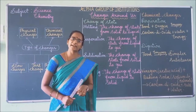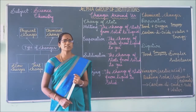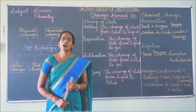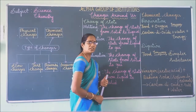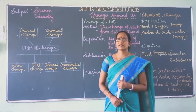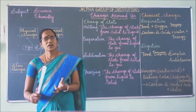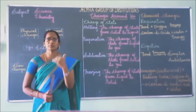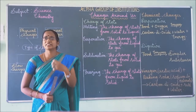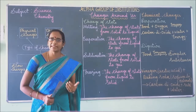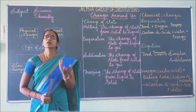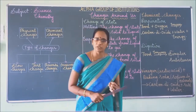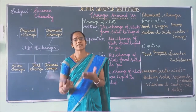Then what is an undesirable change? Undesirable changes are changes which are harmful to us. Examples: rusting of iron and rotting of fruits. If we consume rotten fruits, it will create health issues like vomiting, diarrhea. So desirable change means useful change, and undesirable change means harmful change.